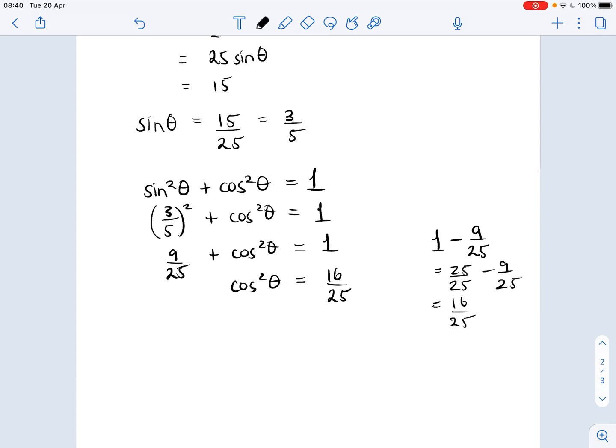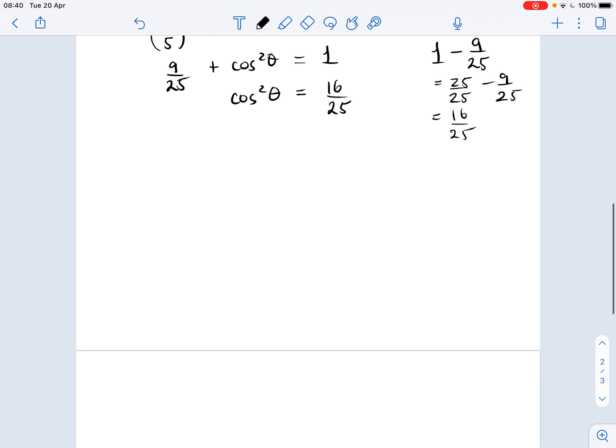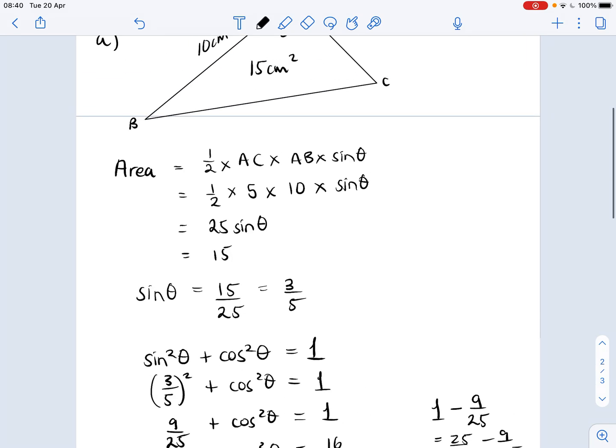So let's do a side note here. 1 minus 9 over 25 is 25 over 25 minus 9 over 25, which is 16 over 25. Okay, so that's cos squared, 16 over 25. If I want cos theta, I need to square root both sides. And I get two answers when I do that, the positive and negative. And that's plus or minus four-fifths. Positive four-fifths, minus four-fifths, those are my two possible values for cos theta. So that's part A complete.